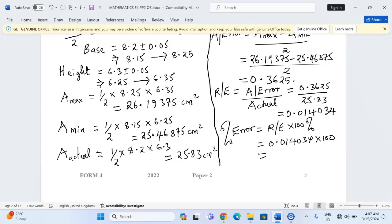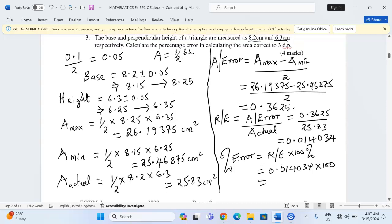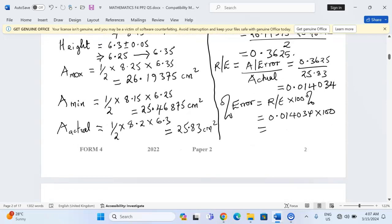But remember, we've been told to bring our answer to three decimal places. So I'm going to have 1.403 expressed as a percentage.